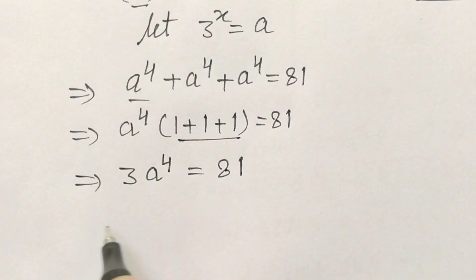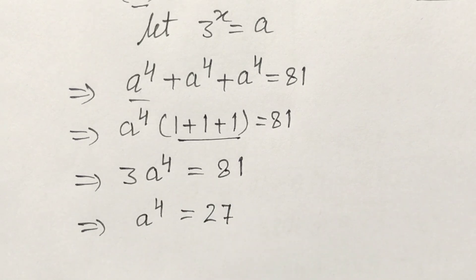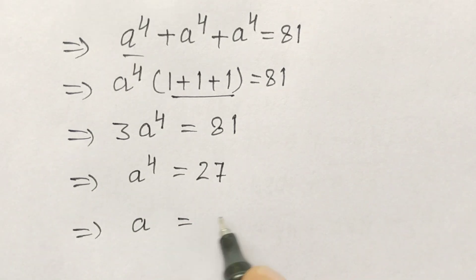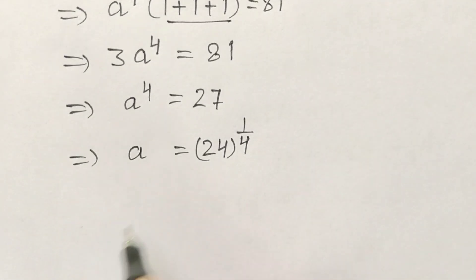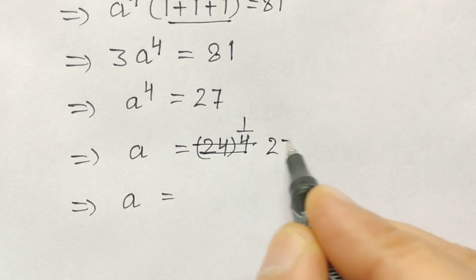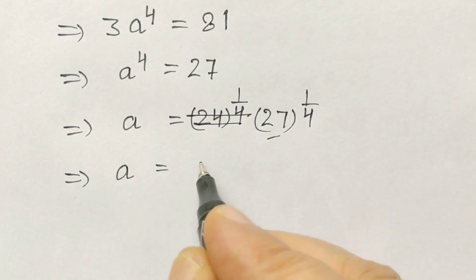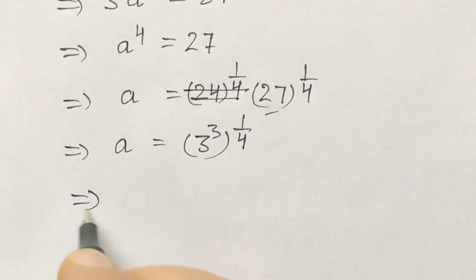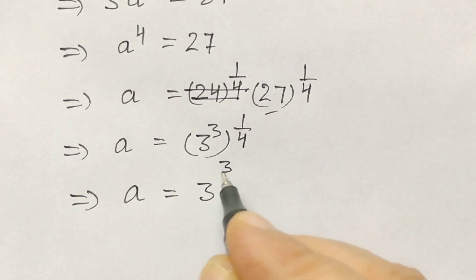So 3 times a to the power 4 equals 81, which gives a to the power 4 equals 27. Therefore a equals 27 to the power 1 by 4. Writing 27 as 3 cubed to the power 1 by 4, a will be equal to 3 to the power 3 by 4.